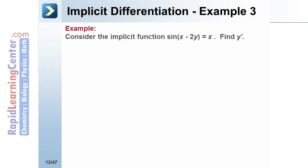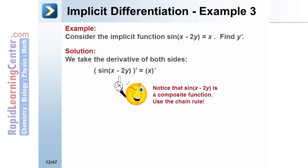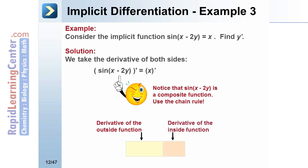Let's look at a third example using implicit differentiation. Consider the implicit function sine of x minus 2y equals x. Our job is to find y prime, so we begin by taking the derivative of both sides. Notice that sine of x minus 2y is a composite function and we will need to use the chain rule: the derivative of the outside function times the derivative of the inside function. The outside function gives cosine of x minus 2y, and the inside function gives 1 minus 2 times y prime.